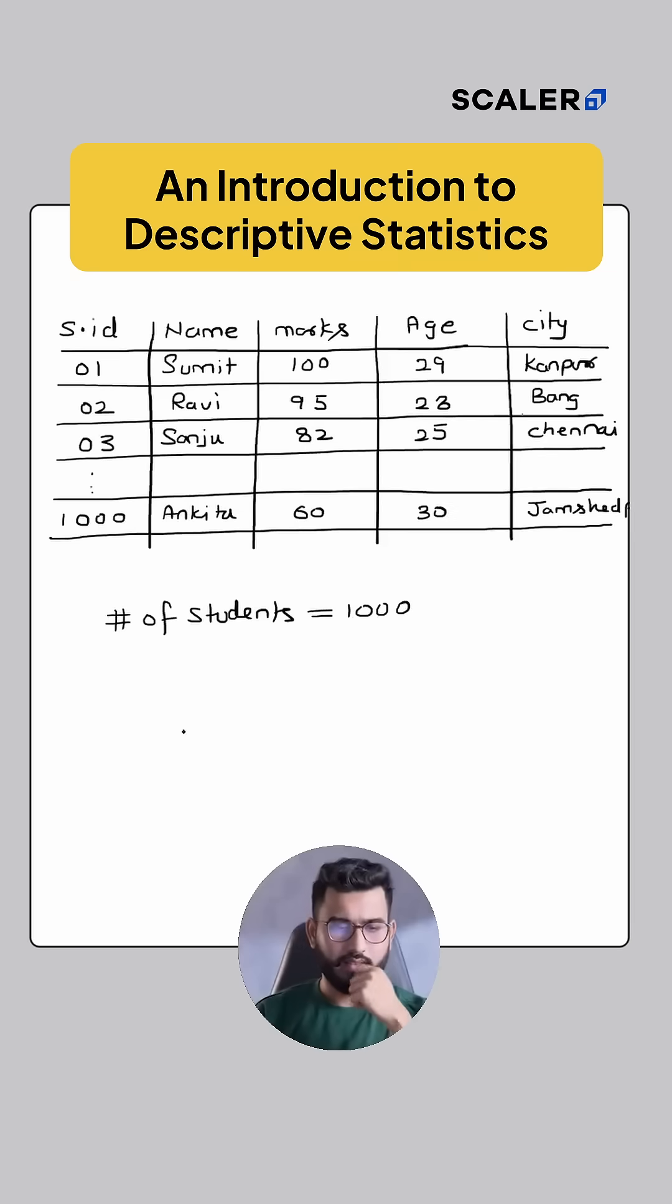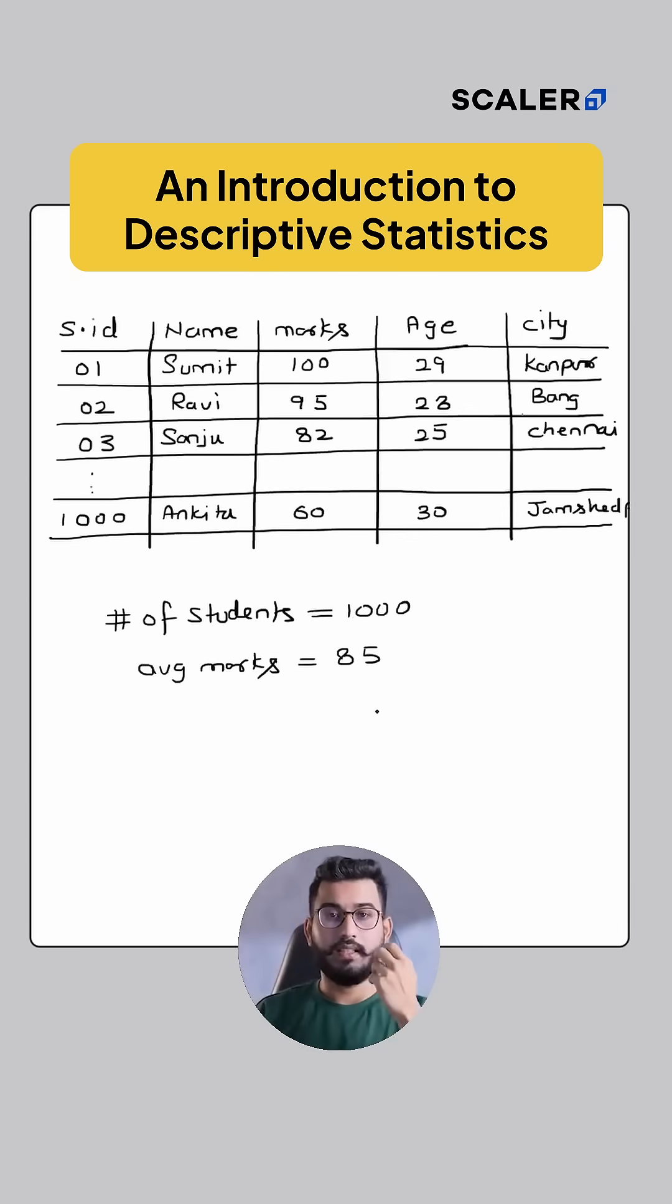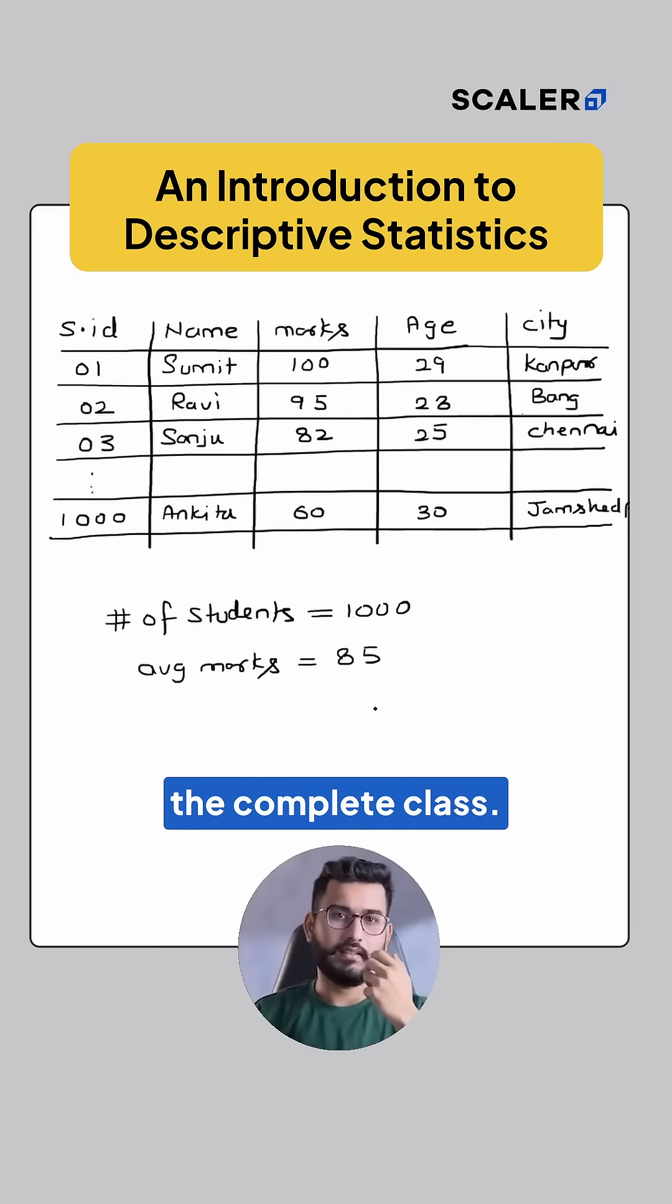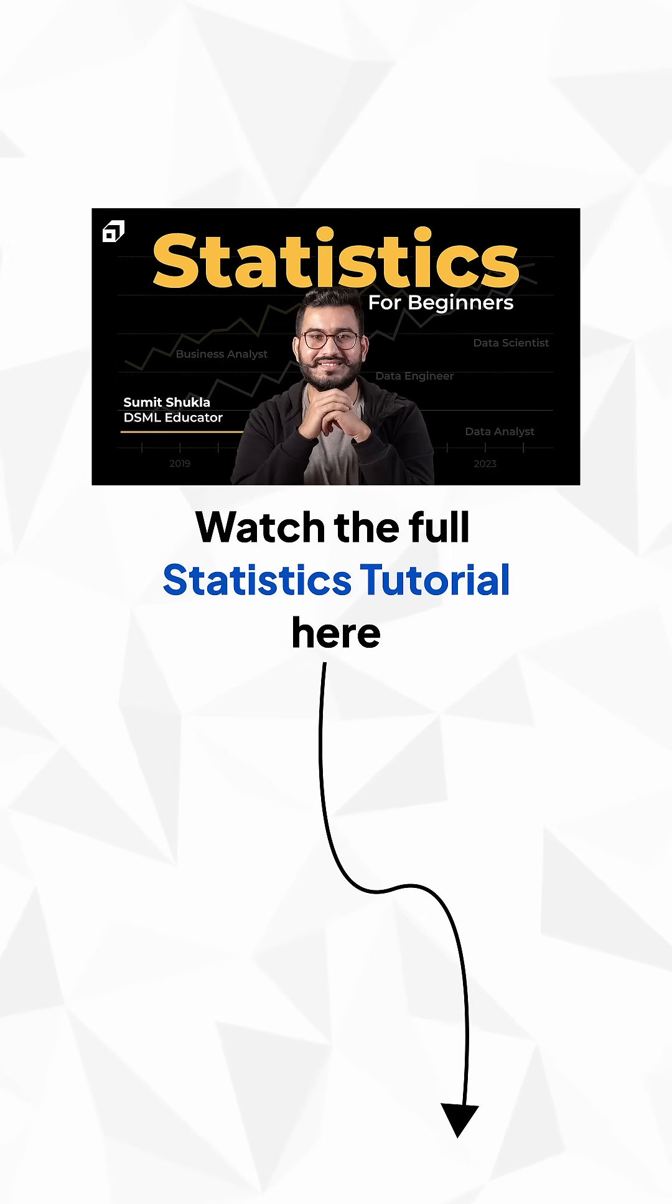Let's say the average marks of this class is 85. Again, this number, just this one number, is describing the complete class, and hence this is a descriptive statistic. Click here to watch the complete tutorial.